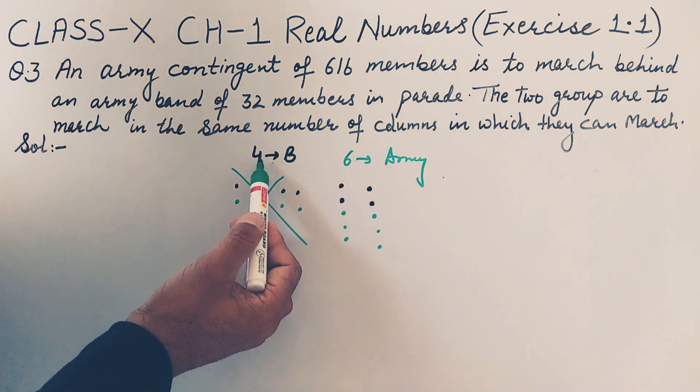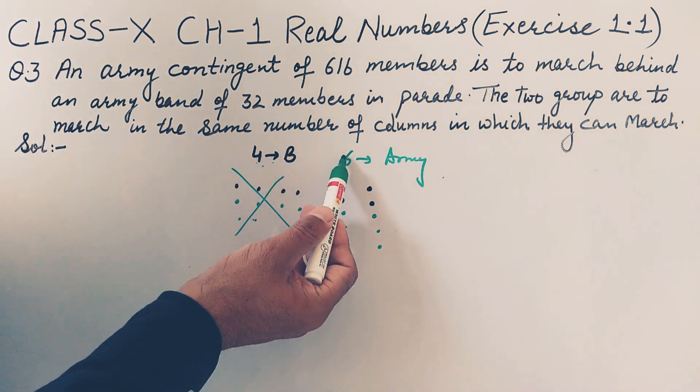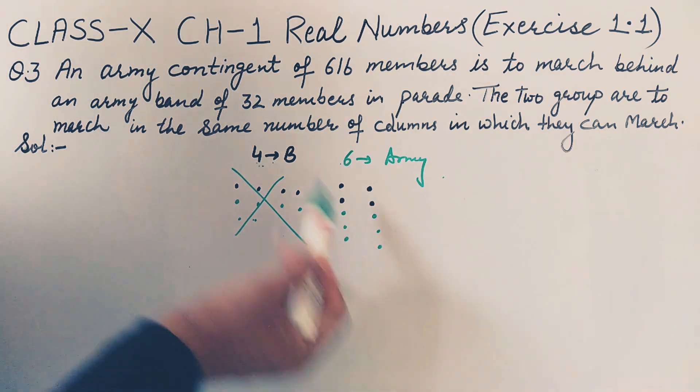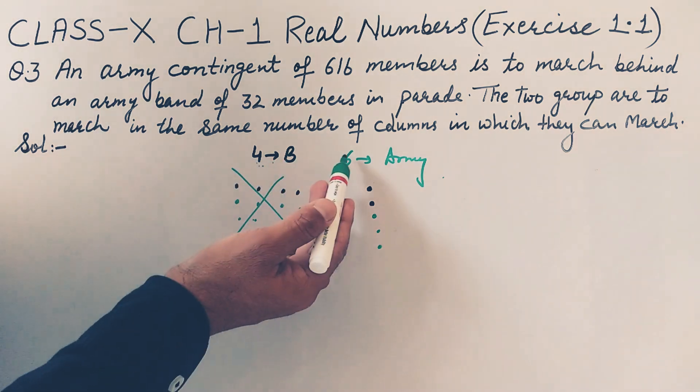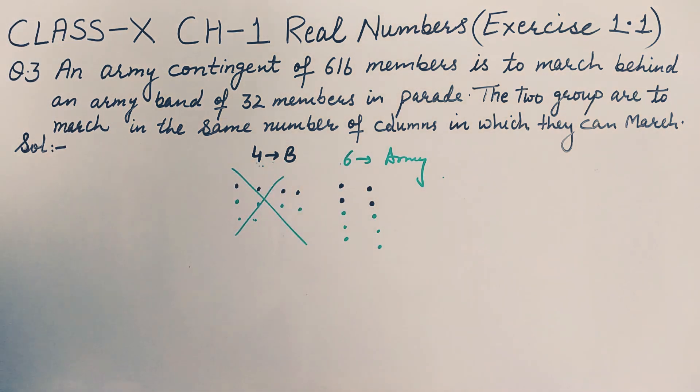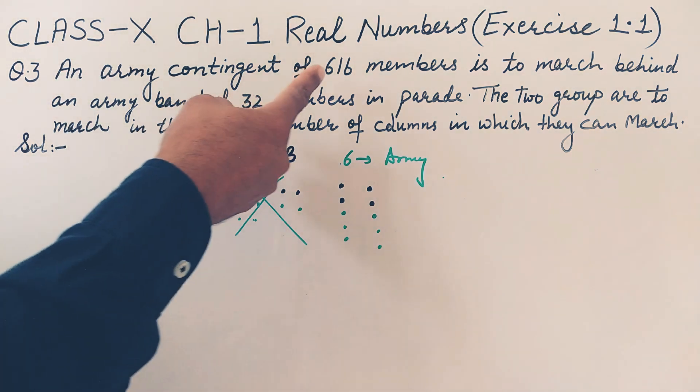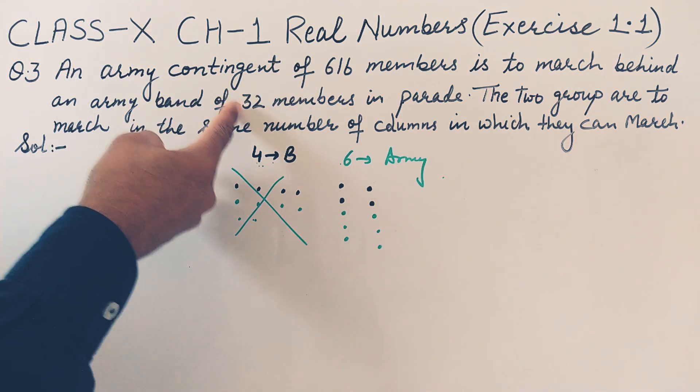So it means two is the answer. There should be two columns for this small question which I have taken. It means we need to find out their HCF because HCF of 4 and 6 is 2. In this type of questions we need to find out the HCF. Here also we need to find out the HCF of 616 and 32.